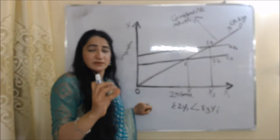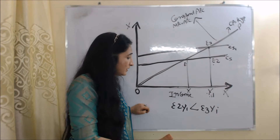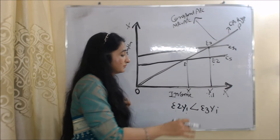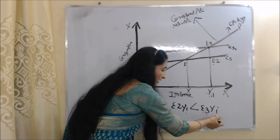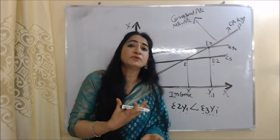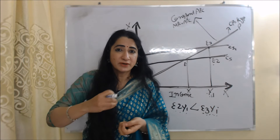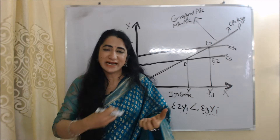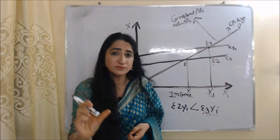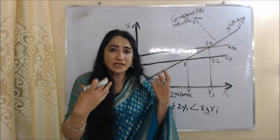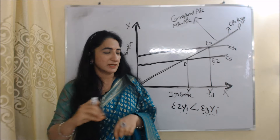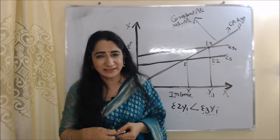When we think the increase in income is transitory, we consume E2Y1. But when we think it is permanent income, we consume E3Y1. E3Y1 is more than E2Y1. Whenever permanent income increases, we consume more — because we are certain about it, so we save less and consume more. When transitory income increases, we consume less because we do not expect to receive it in the future. That is all about the permanent income hypothesis.